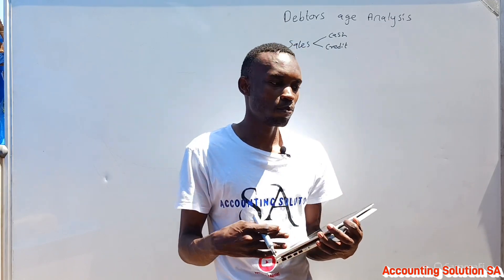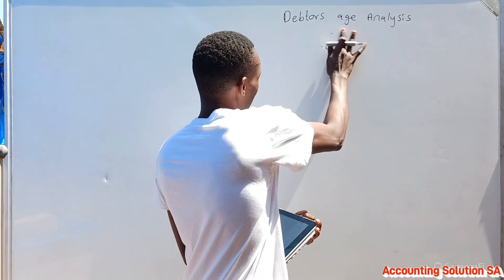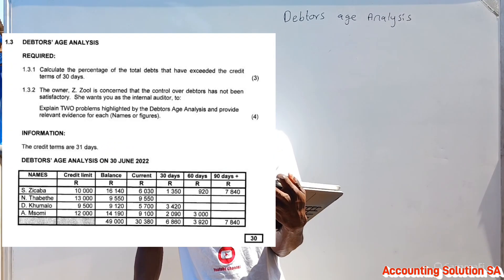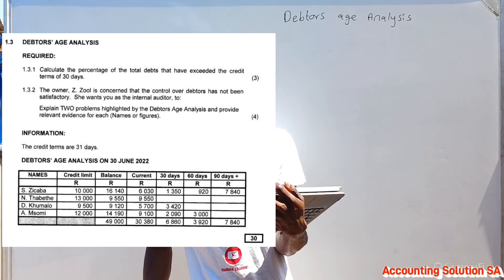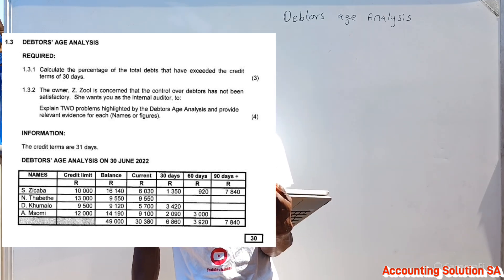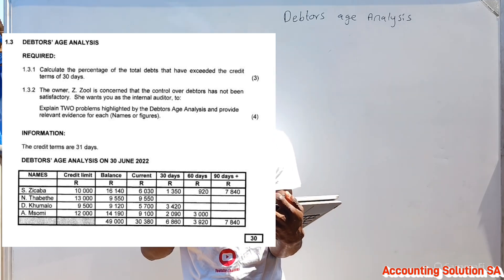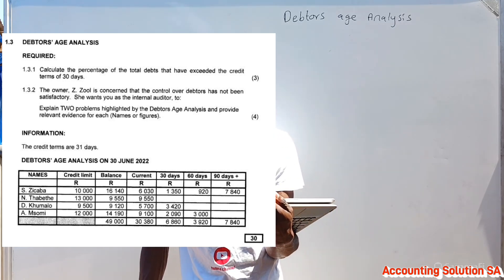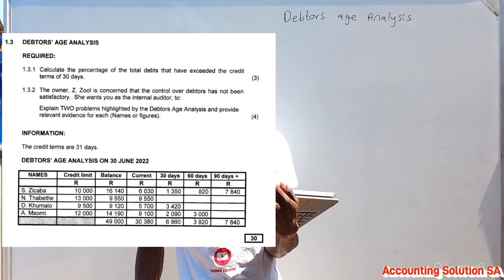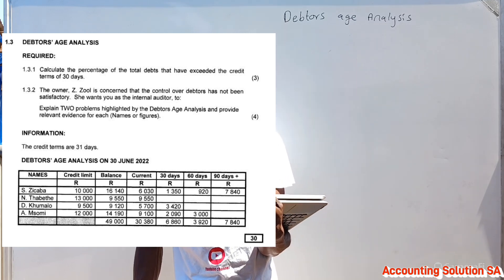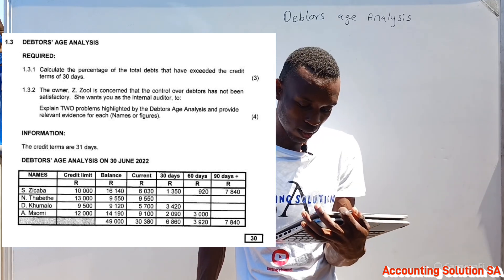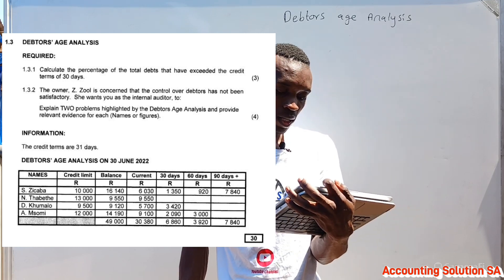If a customer is not paying on time, we charge interest because the customer is paying late. Now let's look at the question for better understanding. This is from a previous question paper. Question 3.1.3.1 asks us to calculate the percentage of total debt that has exceeded the credit term of 30 days. Question 3.1.3.2 states that the owner, Zzul, is concerned that control over debtors has not been satisfactory and wants the internal auditor to explain two problems highlighted by the debtor age analysis, providing relevant evidence for each.